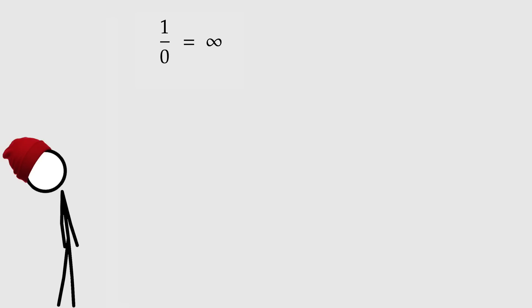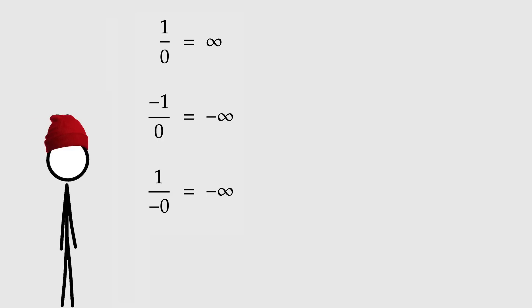Ah, infinity. Might seem reasonable at first, but sadly doesn't work. Suppose it's true. Let's multiply both sides by negative one. Okay, but now I will move that minus sign from that one down to the zero underneath it. But negative zero is just zero, of course. So we end up getting back one over zero. And therefore, one over zero equals both infinity and negative infinity. Mmm, yeah, that might be a problem.